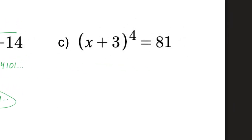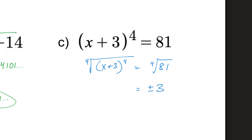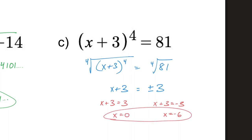For c: (x + 3) to the fourth power equals 81. I'll take the fourth root of both sides to undo the fourth power. The fourth root does require a plus or minus. The fourth root of 81 is plus or minus 3, so the problem splits into two: x + 3 = 3, giving x = 0, and x + 3 = −3, giving x = −6. Both answers work. If you have any questions, make sure you get them answered. Good luck on your assignments, and thanks for watching.